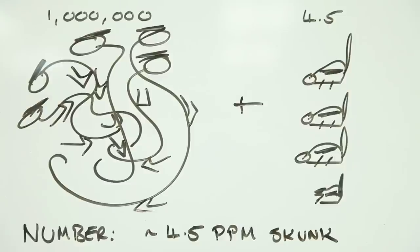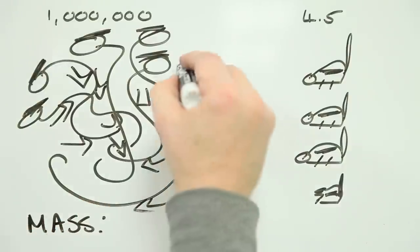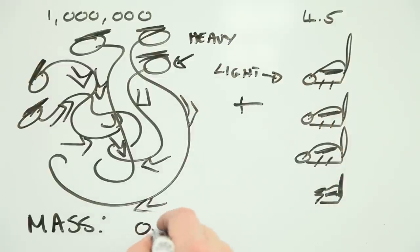But what if you're interested in the relative mass of skunks rather than their number? Assuming that each sea monster weighs 15 metric tons, there are only 0.004 parts per million skunk to sea monster on a mass-for-mass basis. All that's changed is the way we're measuring things, but the quantity we get in PPM is very different.